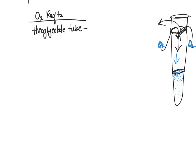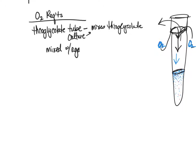With bacteria inoculated throughout the tube, different growth patterns will appear depending on the type of bacteria. The thioglycolate tube is made by mixing thioglycolate — which is highly reducing — with a little bit of agar, and then autoclaving it. In our laboratory we just use broth. After autoclaving or boiling, it is then available to inoculate.